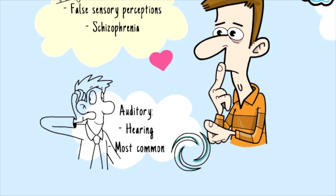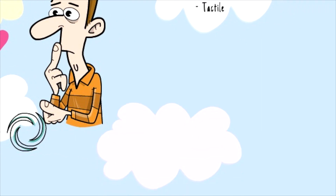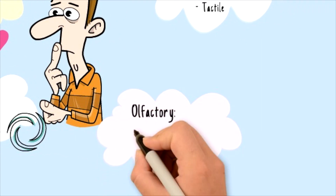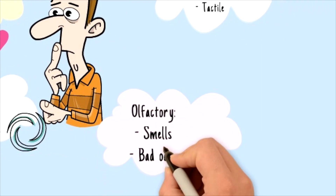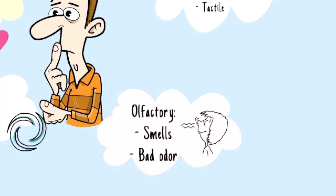The second type of hallucination is called olfactory hallucination. This type of hallucination is related to the sense of smell. What happens is that the person smells an odor which no one else is smelling, and it is usually a bad one, like something that is rotting. So this is the olfactory type of hallucination.